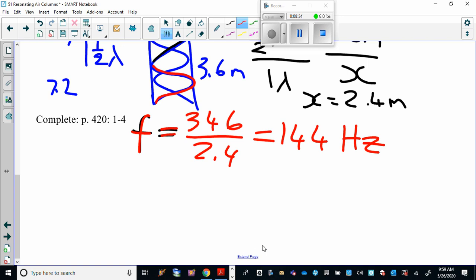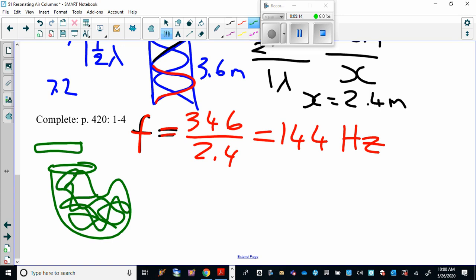And the last question says, if we made the column longer, explain what would happen to the fundamental note. Would it be a higher or a lower frequency? Well, you can probably answer this question just to common sense. If I have a flute, and I have a tuba, you know, a big brass instrument, which one makes a lower sound? Here's the flute, and here's the tuba. Oh, I can't draw a tuba.